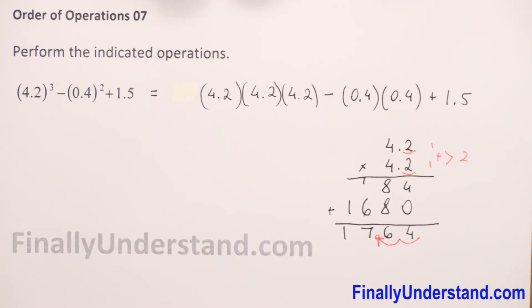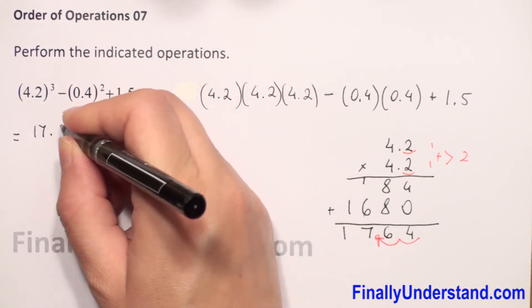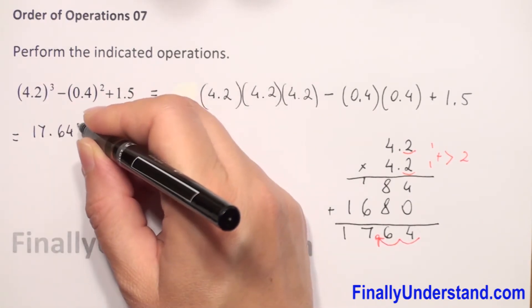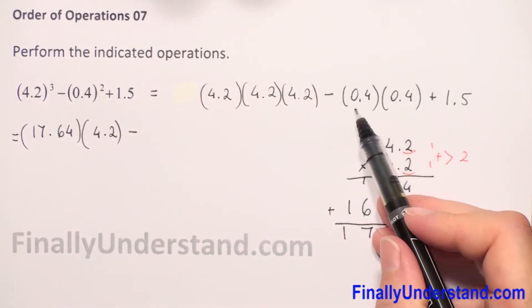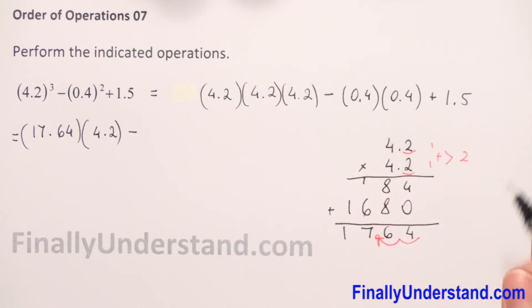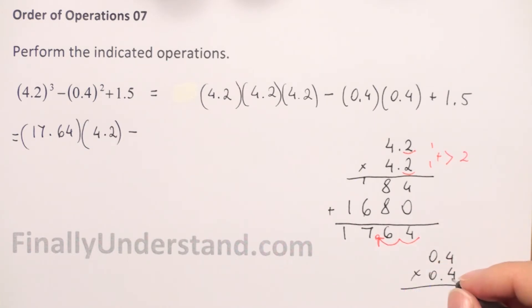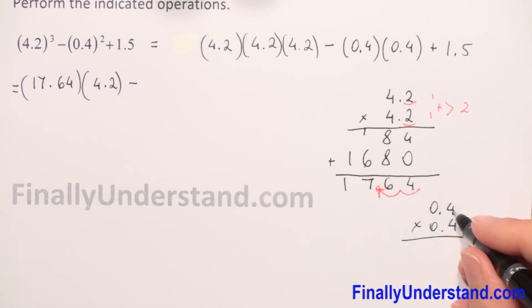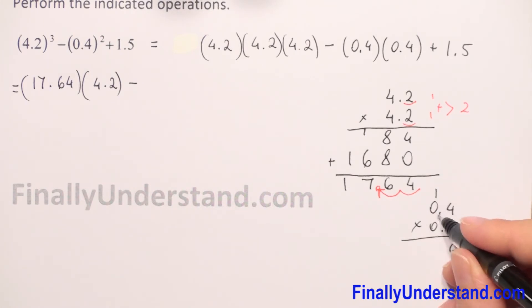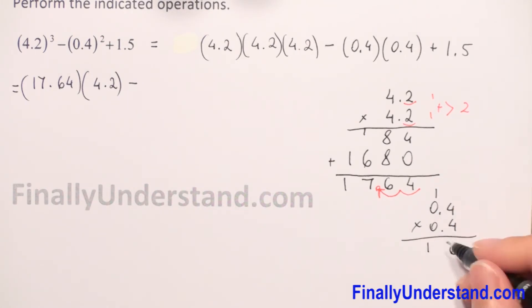So the result of 4.2 × 4.2 is 17.64. Now we have 17.64 × 4.2 minus the next part. We also compute 0.4 × 0.4: multiply like whole numbers. 4 × 4 = 16, so we write 6 and carry 1. Then 4 × 0 = 0 + 1 = 1, and 0 × 4 = 0.